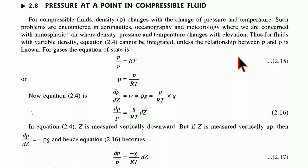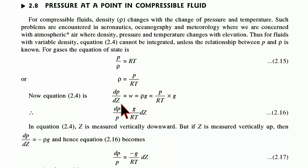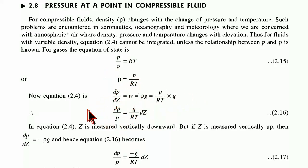For gases, the equation of state is: p divided by rho equals RT, which means rho equals p divided by RT. Substituting into equation 2.4 — dp/dz equals w equals rho·g — we get p divided by RT multiplied by g. Therefore, dp/p equals g·dz divided by RT. In equation 2.4, z is measured vertically downward.